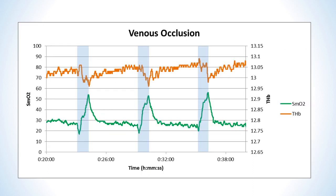This graph shows the SMO2 and THB response on a cyclist's vastus lateralis while alternating between five minutes of load and one minute of rest. The shaded areas indicate the rest periods. During the five-minute load, THB slowly and steadily increases; as soon as the load is released, THB quickly returns to its value during the previous rest. This long steady increase followed by a quick return is the signature of a venous occlusion. You must also consider the magnitude of muscle tension and look for some type of drop in THB when tension is released to confirm this pattern.